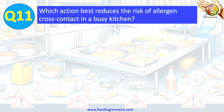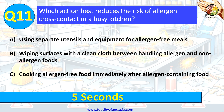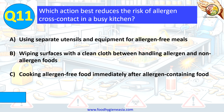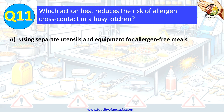Question 11. Which action best reduces the risk of allergen cross-contact in a busy kitchen? A. Using separate utensils and equipment for allergen-free meals. B. Wiping surfaces with a clean cloth between handling allergen and non-allergen foods. C. Cooking allergen-free food immediately after allergen-containing food. The correct answer is A. Using separate utensils and equipment for allergen-free meals.